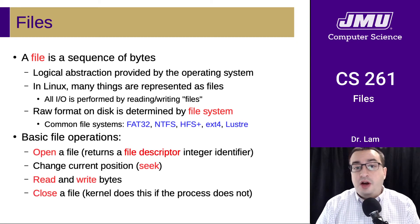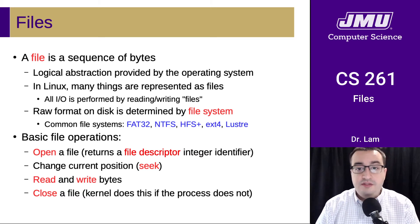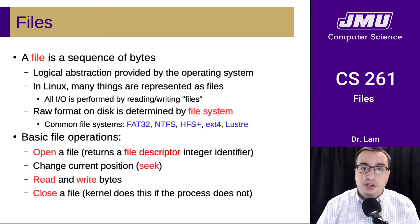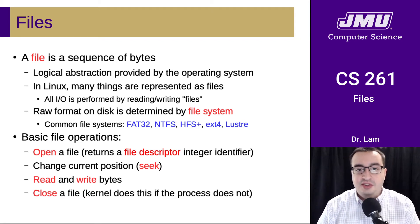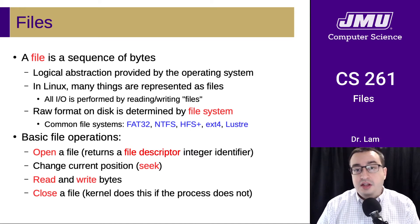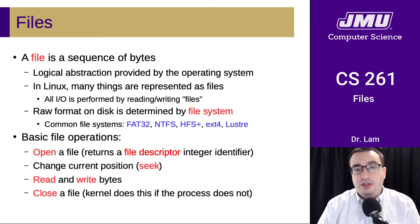The basic file operations include opening a file, which returns a handle to the file in the form of a file descriptor — an integer identifier. You can change the current position in the file using a seek operation, which you've already used in the projects in this course. You can read and write bytes, and when you're done with the file you should close it, although the operating system kernel will do this if the process does not.